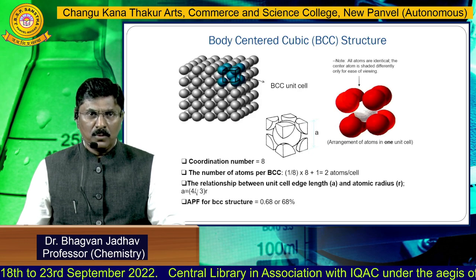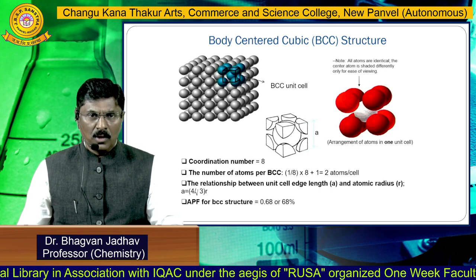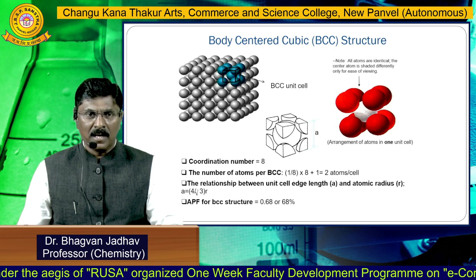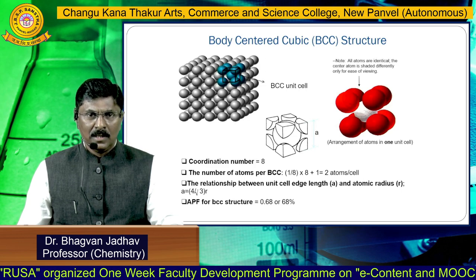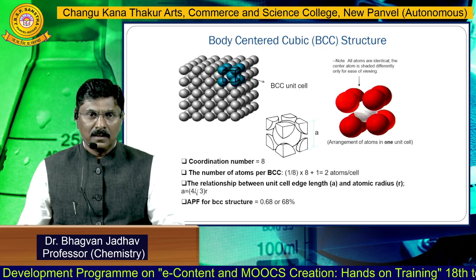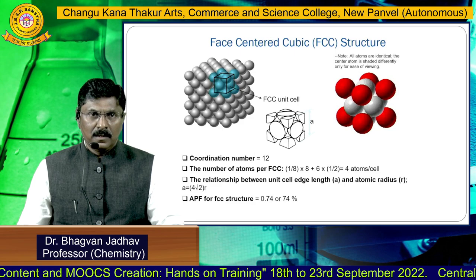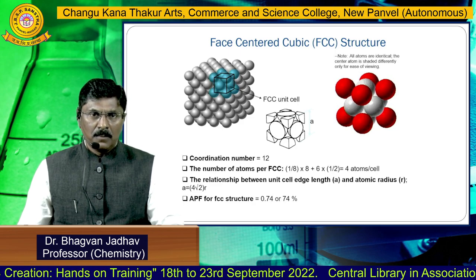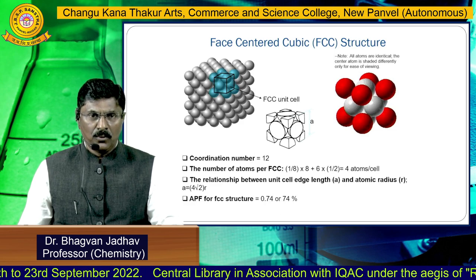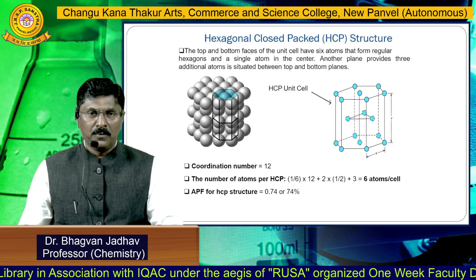In the body-centered cubic (BCC) structure, spheres are at the eight corners and one sphere is at the center. The coordination number is 8, the number of atoms per unit cell is 2 (1/8 × 8 + 1 = 2), the relation is a = 4r/√3, and the atomic packing factor is 0.68 or 68%. In the face-centered cubic (FCC) structure, the coordination number is 12, the number of atoms per unit cell is 4, and the atomic packing factor is 0.74 or 74%. In hexagonal close packing (HCP), the atomic packing factor is also 0.74 or 74%. Thank you.